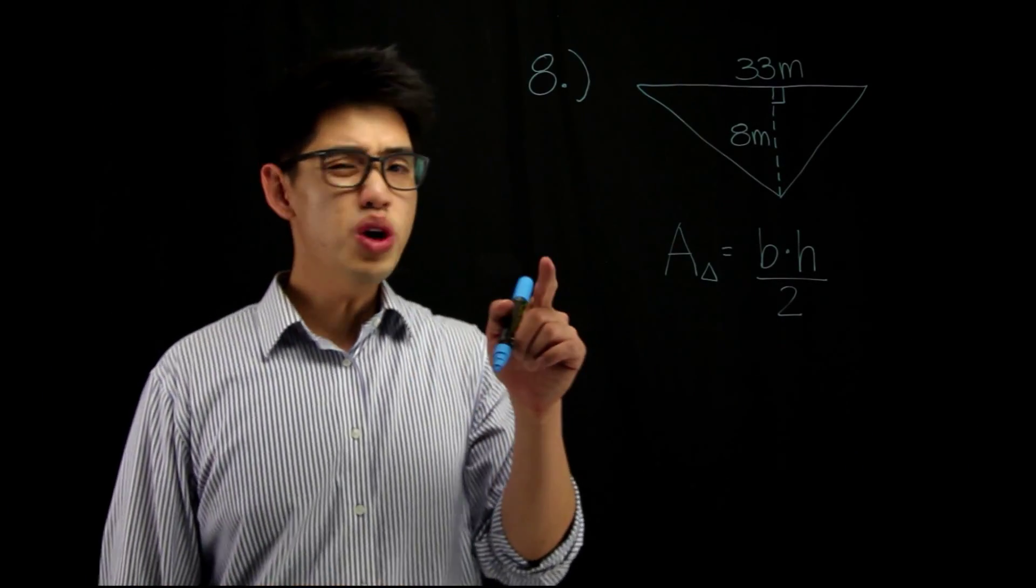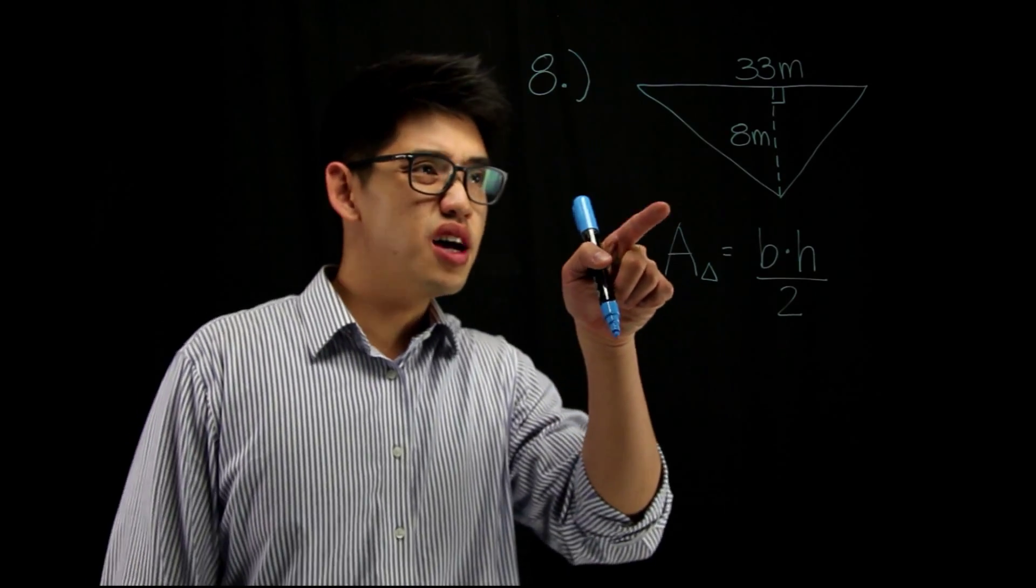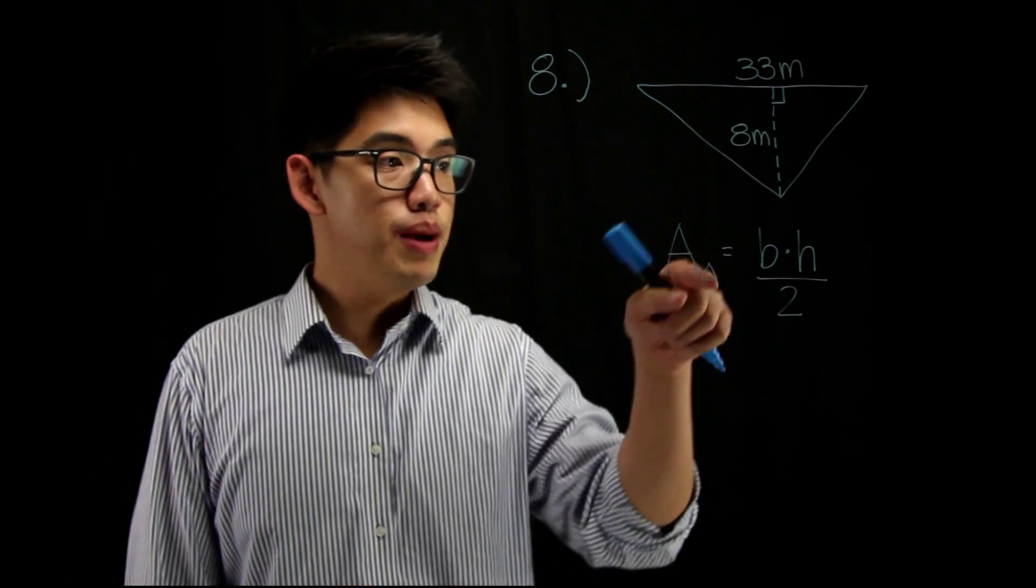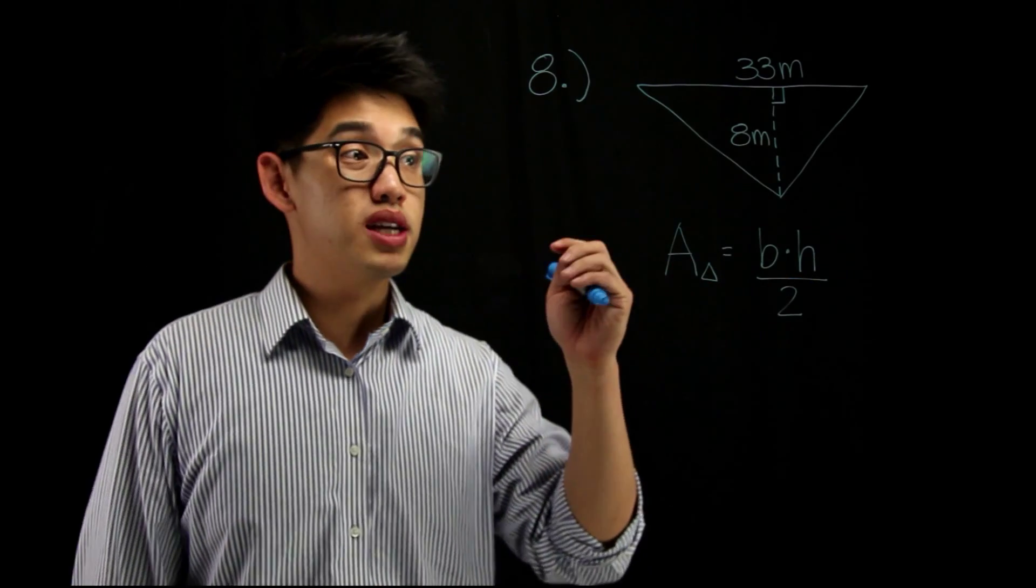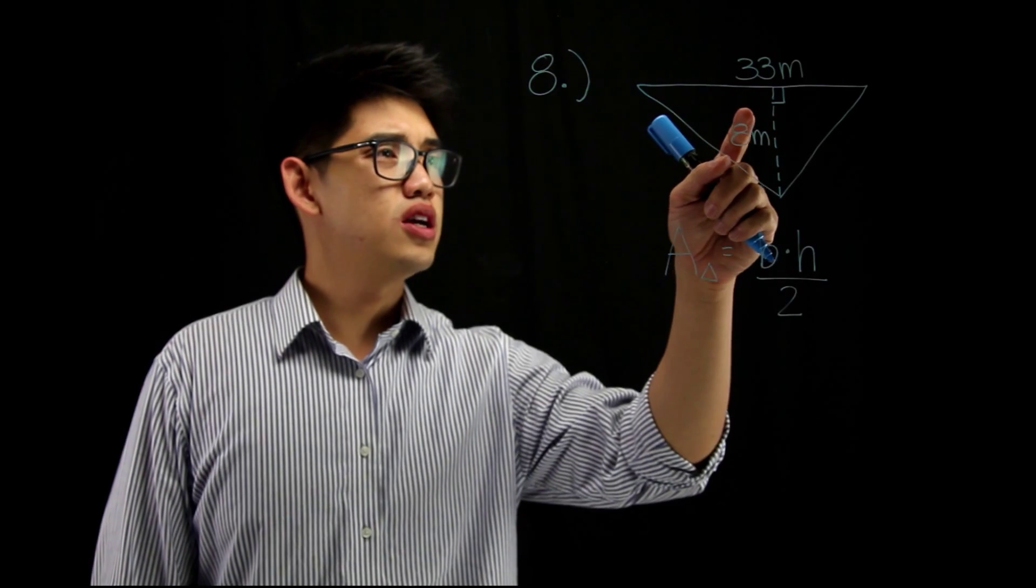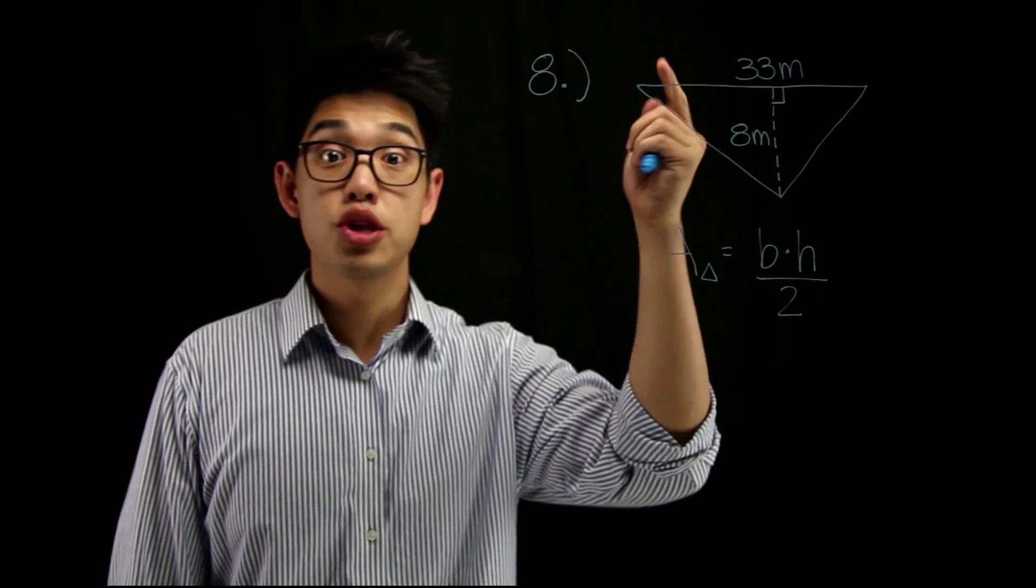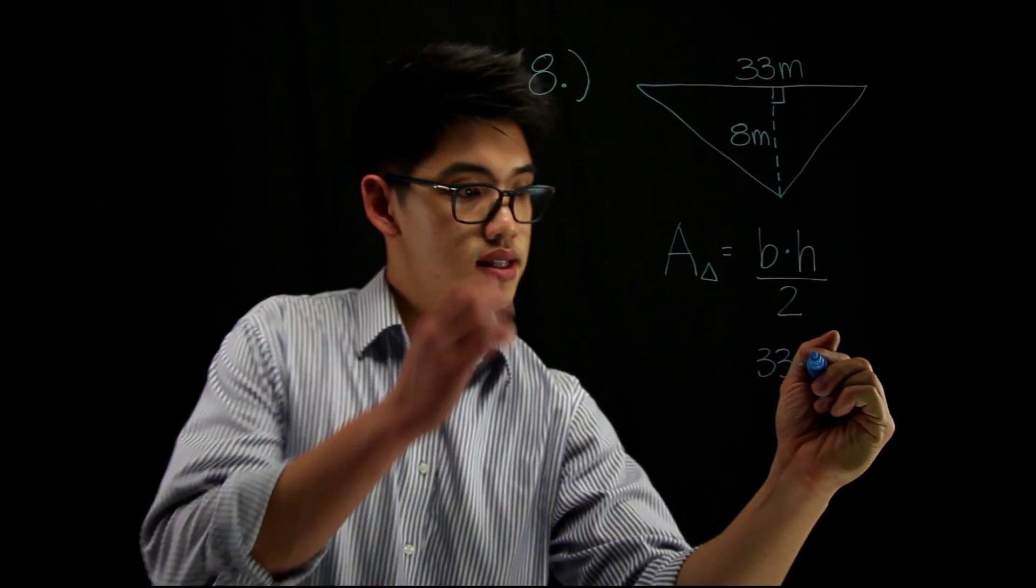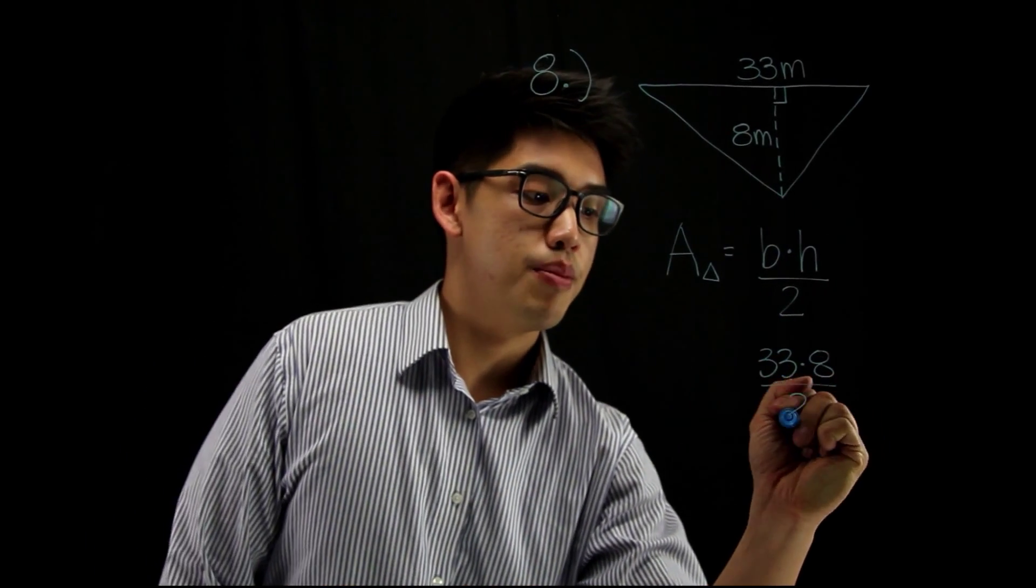For number 8, we're going to find the area of this triangle. Whoa, it looks kind of like it's upside down. Again, the area of a triangle is base times height, and then we're going to divide by 2 because it's half of a rectangle or a square. Let me see, the base right here is going to be 33. So, I'm going to write 33 times the height, which is going to be 8, and then we're going to divide that by 2.